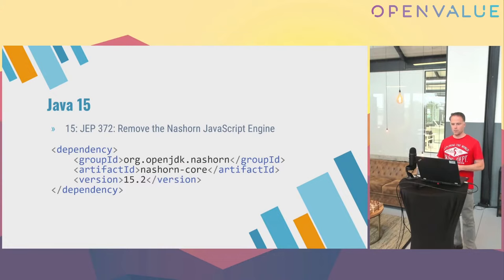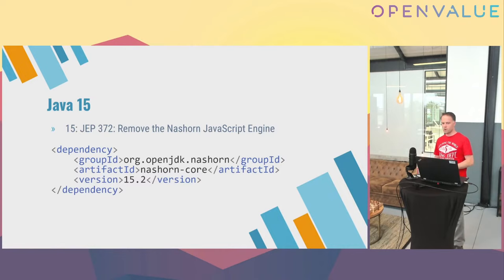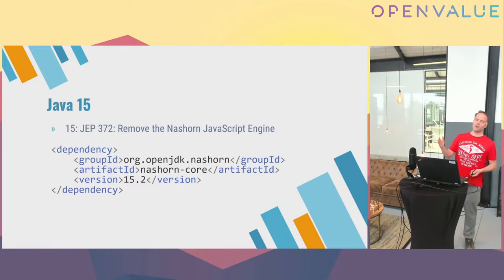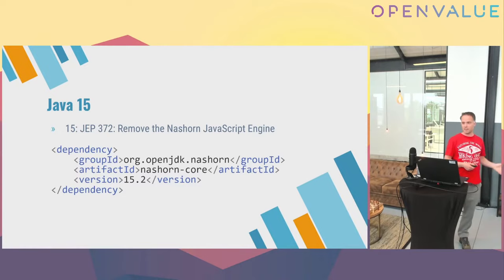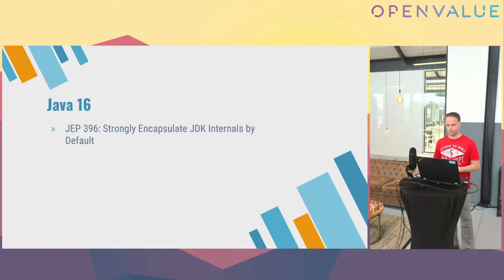In Java 15, the Nashorn JavaScript engine was removed. I always thought nobody would be using it — I saw it in conference talks but never in practice. When I did many upgrades for one company, at one point I got a Nashorn exception and found out they were actually using it. If you still want to use it, you can simply add the dependency again — it's no longer part of the JDK but you can still add it.